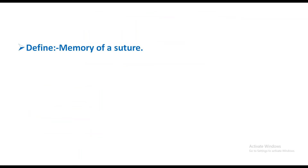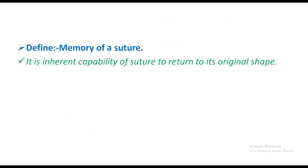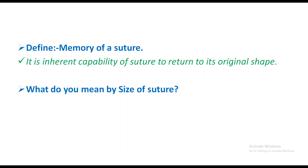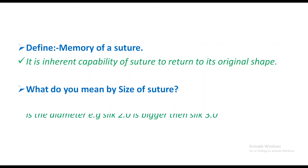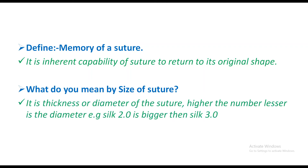The memory of a suture is the inherent capability of the suture to return to its original shape. When memory is high, the suture tends to return to its original shape, making it difficult to handle. The size of the suture refers to the thickness or diameter — the higher the number, the lesser the diameter.